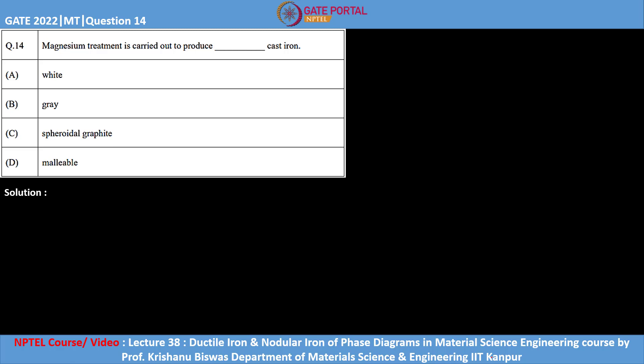Coming to the magnesium treatment, we add magnesium to gray cast iron in order to produce nodular or ductile iron.